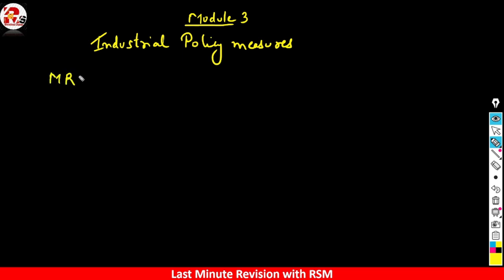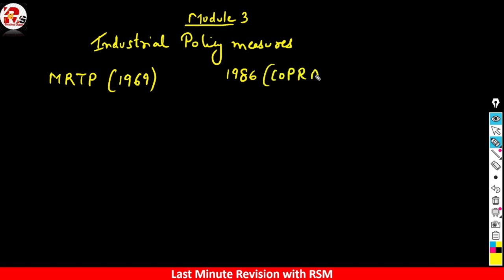The MRTP Act — Monopolies and Restrictive Trade Practices Act — was enacted in 1969. It included provisions for consumer protection. Later, in 1986, COPRA (Consumer Protection Act) was made. Then in 2002, the Competition Act was made, which completely replaced the MRTP Act.